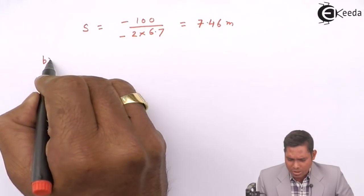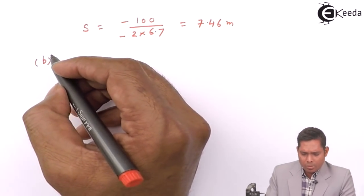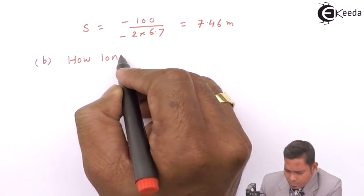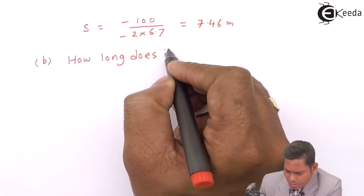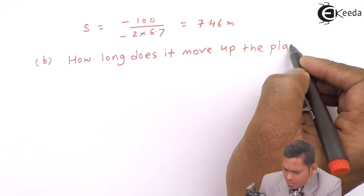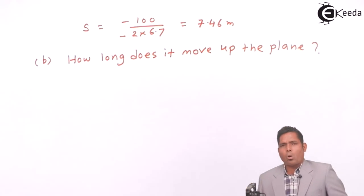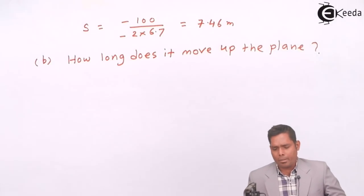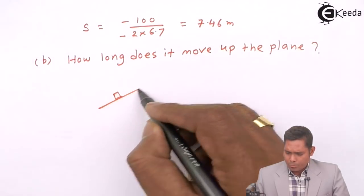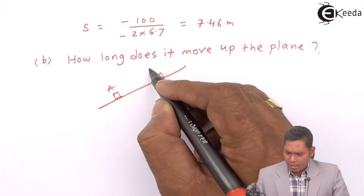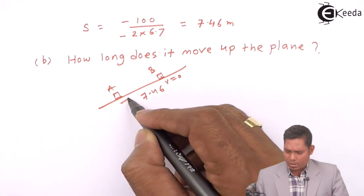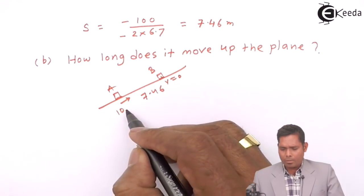Now the second part of the question is, how long does it move up the plane? That means how much time it will take to reach the point B before coming to rest? So the block is moving up to the point B, here is A, here is B, this displacement is known as 7.46, and here the final velocity is 0, the initial velocity was supposed to be 10 meters per second.